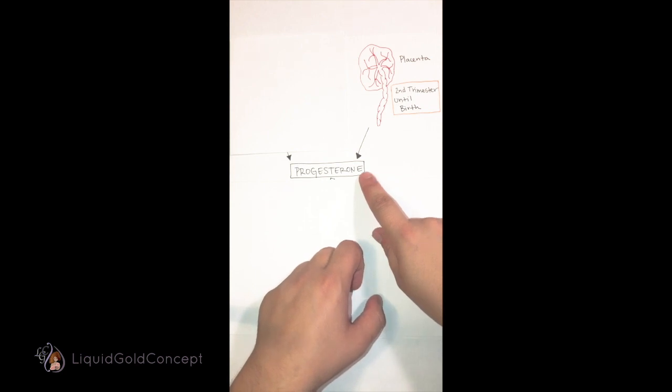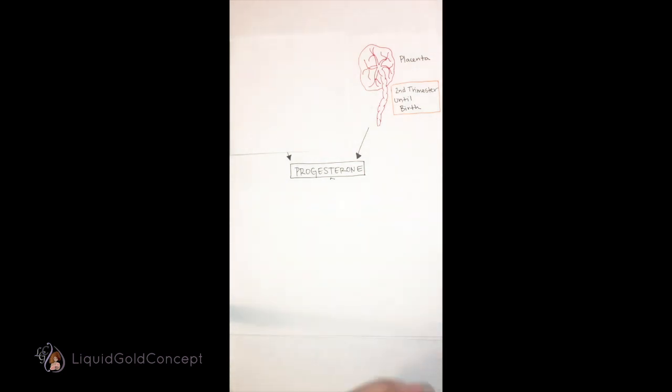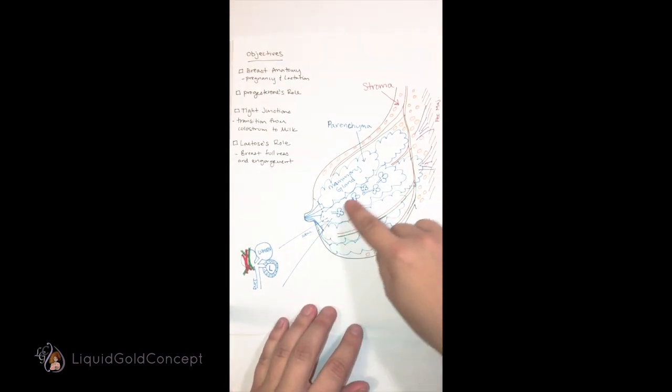Progesterone is the hormone responsible for maintaining the pregnancy, and it contributes to rapid development of the mammary gland epithelial cells and the mammary gland tissue.